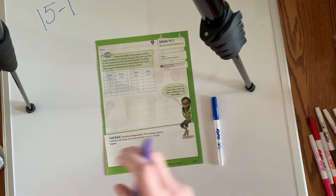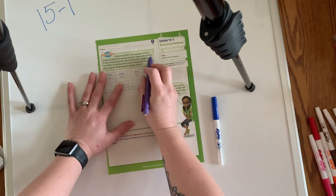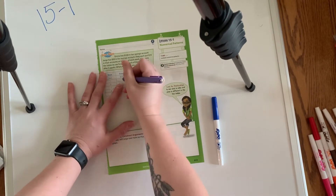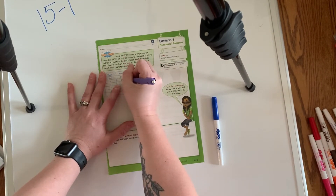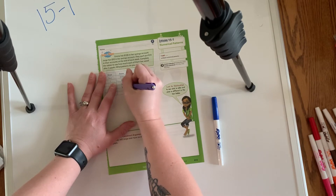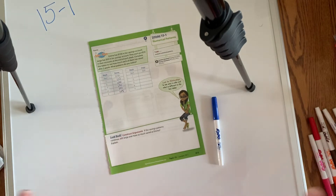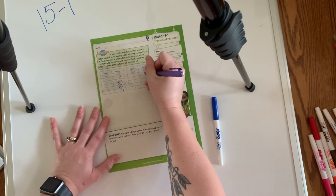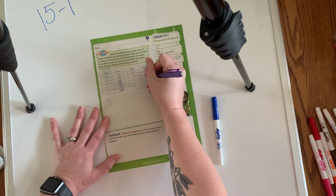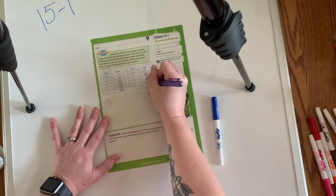If we were in class, I know you would get through this super quick because we're just going to add $10 to each one. So Emma's account goes: $110, $120, $130, $140, and $150. And then Jorge's account goes: $60, $70, $80, $90, $100.